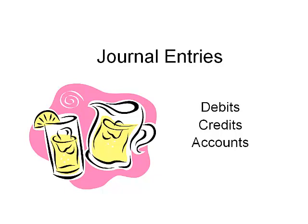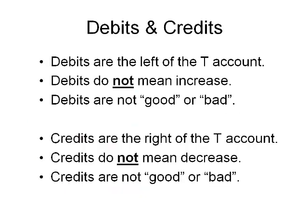Let's talk about journal entries and debits and credits. Debits and credits are ways to change an account balance — they are the mechanism that allows us to move balances either up or down. Debits are on the left of the T-account and credits are on the right. Sometimes debits make an account go up and sometimes debits make an account go down, depending on which account.